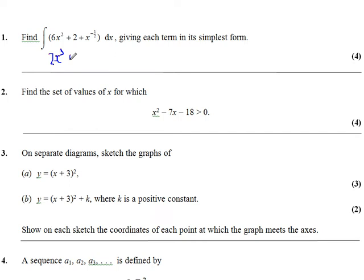2 must have come from differentiating 2x. And the last bit, x to the power minus 1 half must have come from x to the power 1 half, because again when you differentiate you lower the power by 1.